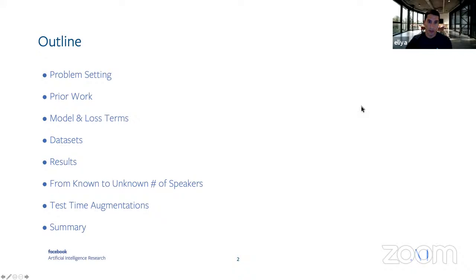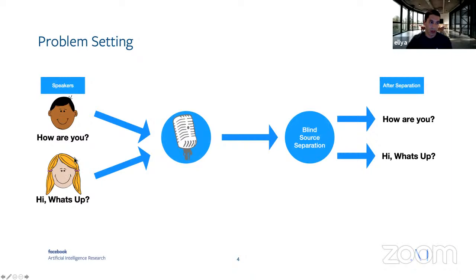The problem setting is that we have multiple speakers that are talking simultaneously, and we have a single microphone that records them. We want to do a blind source separation — basically we want to recover the speech from each one of the speakers.